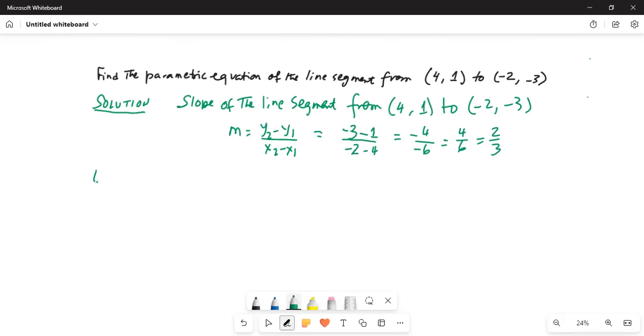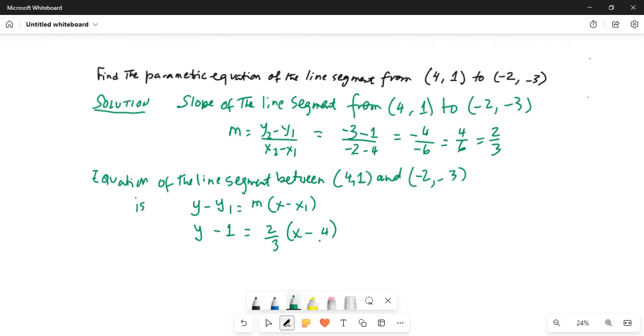Equation of the line segment between (4, 1) and (-2, -3) is y minus y1 equals m times (x minus x1). Now, my y1 is 1, so y minus 1, my m is 2/3, and x1 is 4. This is the relationship between y and x, and we need to establish a parametric equation.